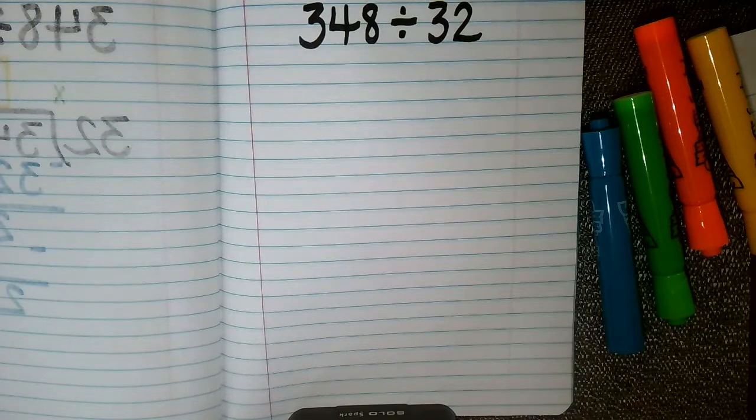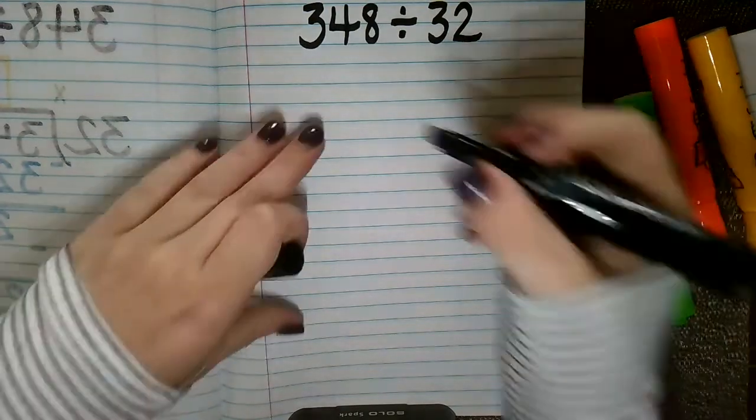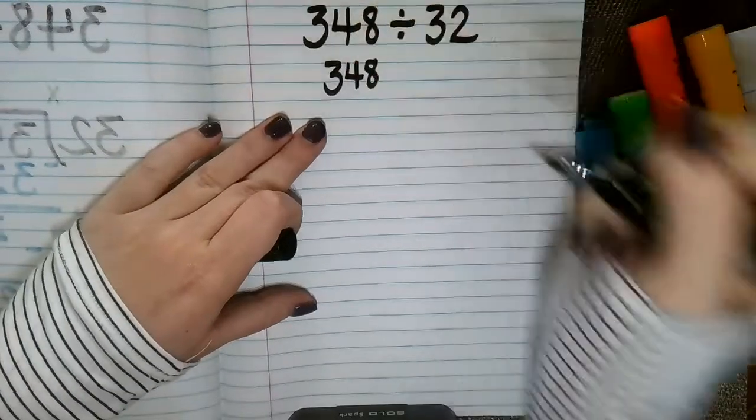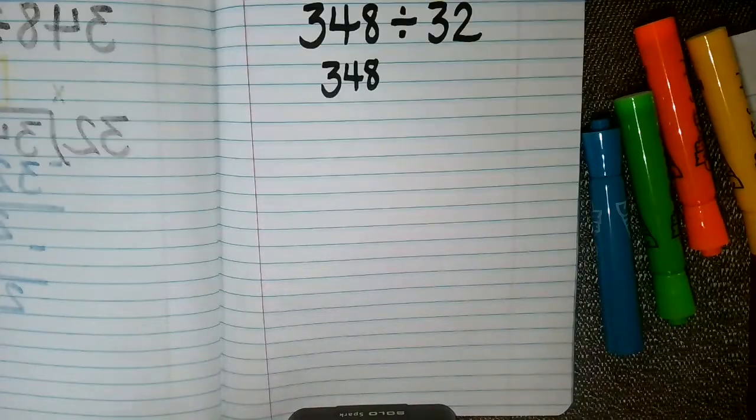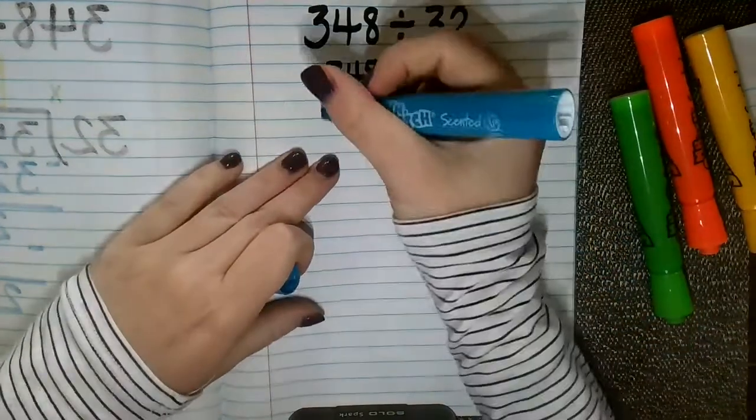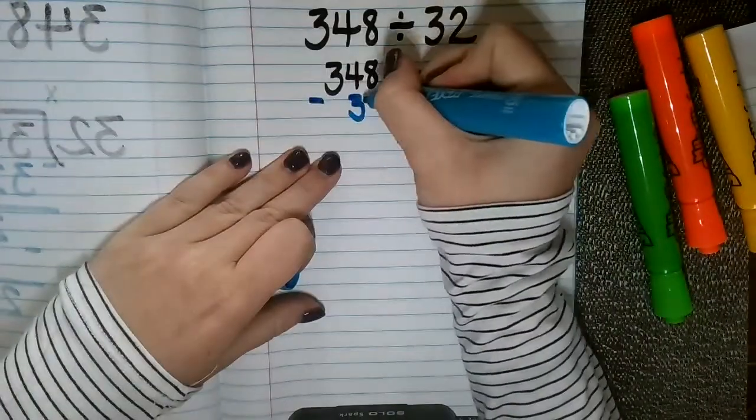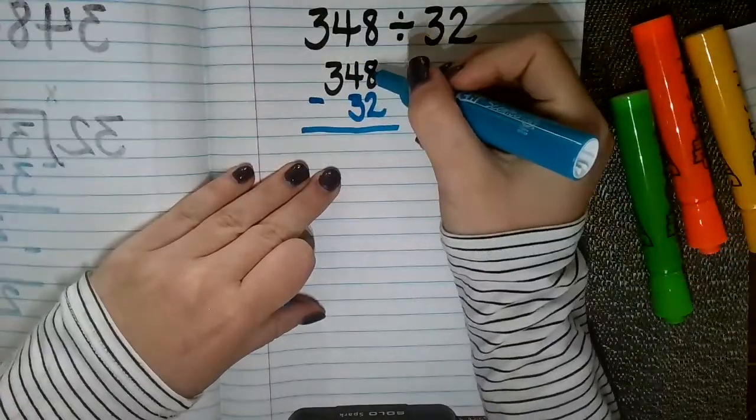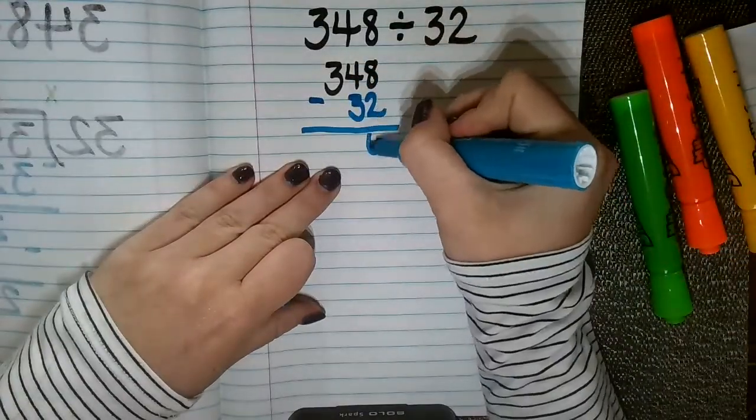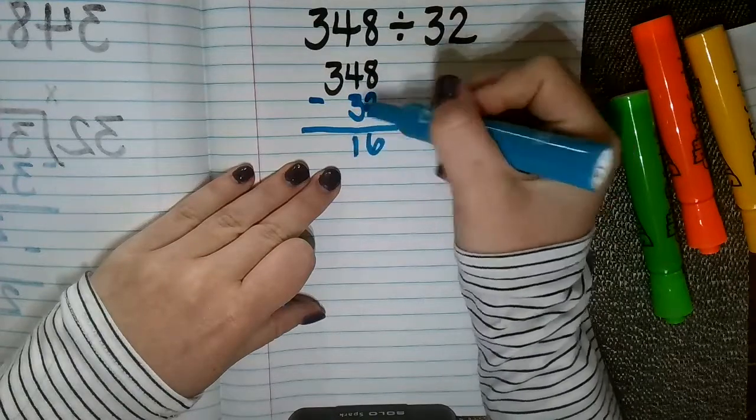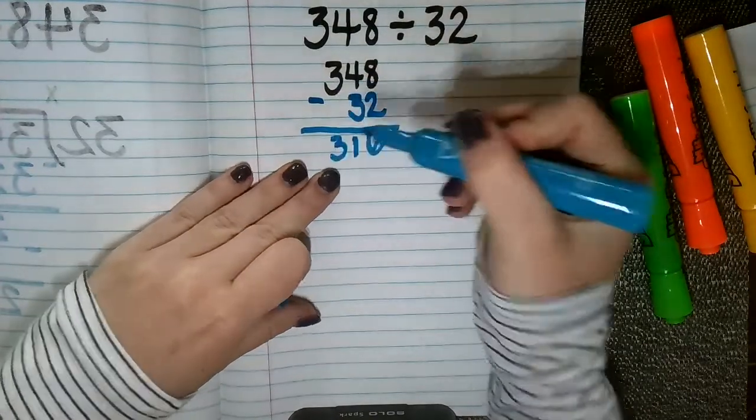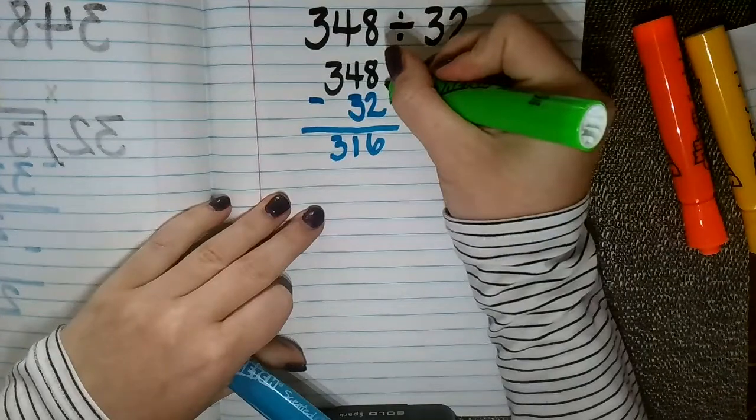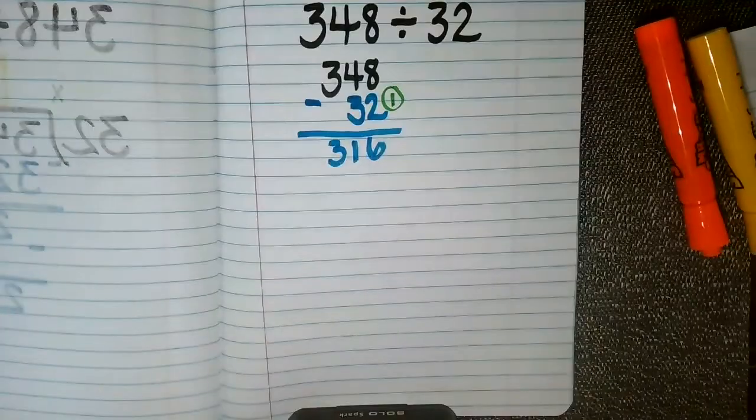So on your piece of paper, we are going to start with our dividend of 348. We want to make sure we always start with that largest number. And like I said before, we are just going to subtract our divisor, so we are going to subtract 32. Now I know that 8 minus 2 is 6, 4 minus 3 is 1, 3 minus nothing is 3. So I have just taken one group of 32 from the number 348.